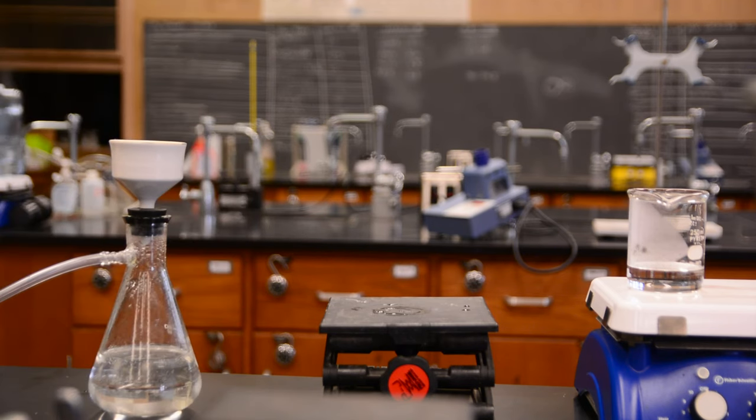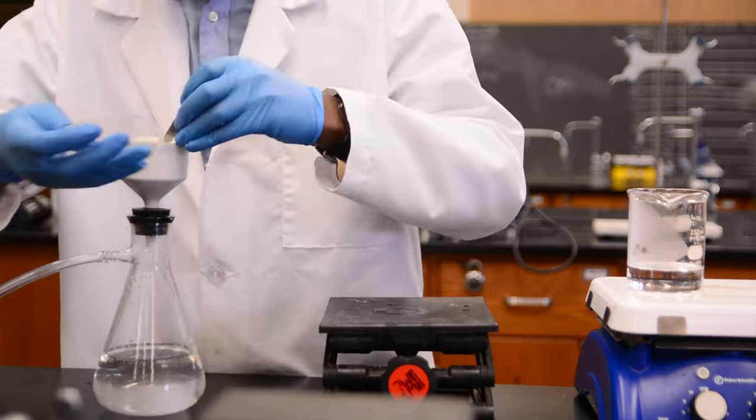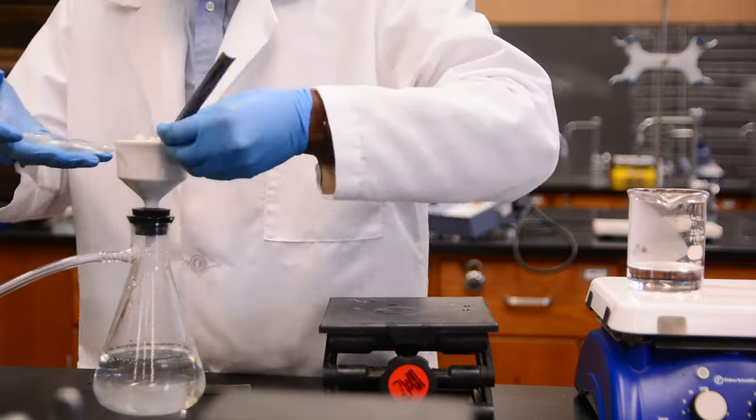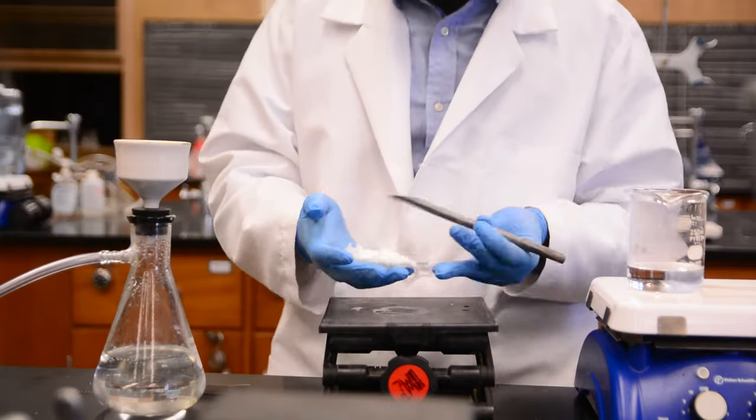After this, let the vacuum run for a few minutes to further dry your product. Your product should now be almost dry. You can leave it out to air dry at room temperature or put it in the oven. You have now completed a recrystallization.